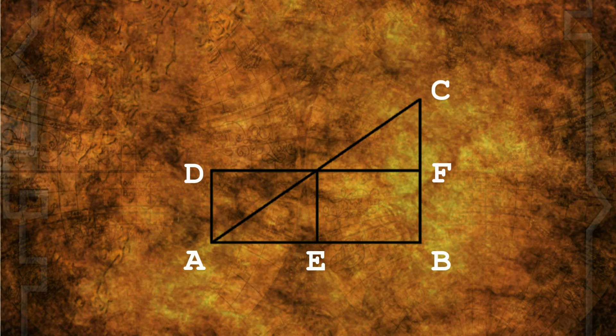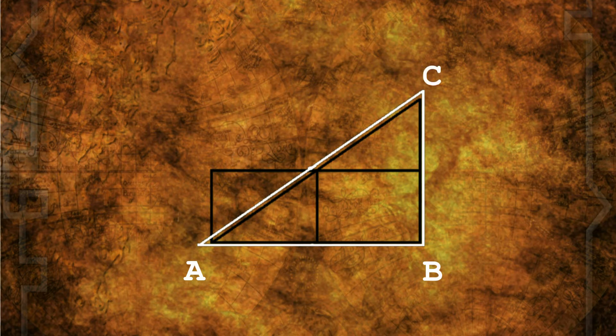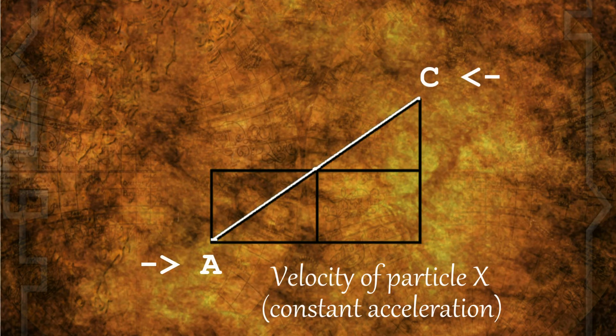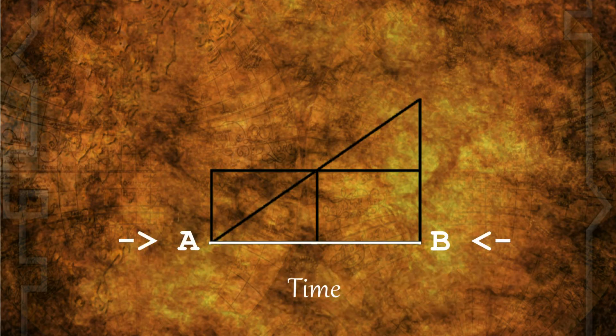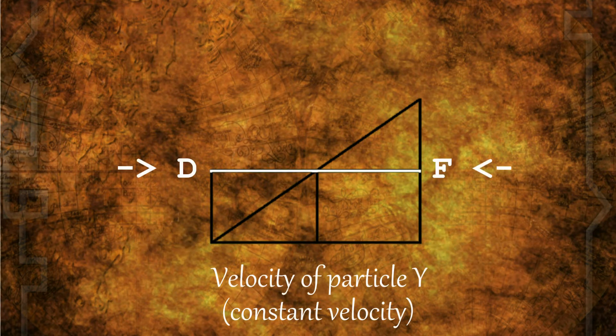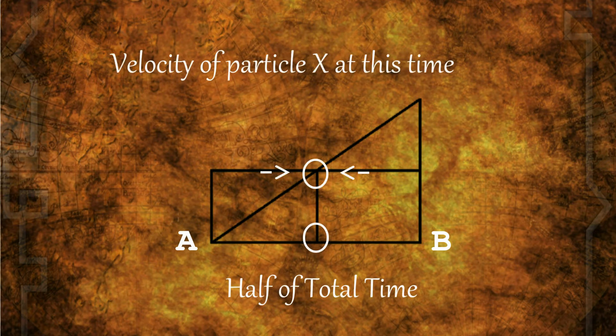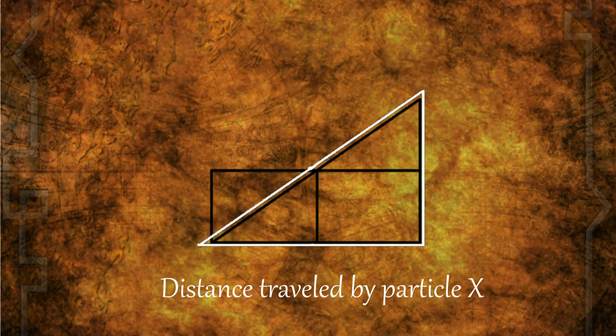Using this geometric depiction of the Merton Mean Speed Theorem, Oresme was able to utilize his observation that the area of triangle ABC must be equal to the area of rectangle ABDF. To see the significance of this, let us assume that line AC represents the velocity of some particle X with constant acceleration, while line AB represents the duration of time over which this particle travels. Next, let us assume line DF represents the velocity of another particle Y, traveling at a constant velocity equal to the velocity of particle X at time AB over 2. Because the areas of the two shapes are equal, it can then be concluded that the total distance traveled by the two particles is the same.